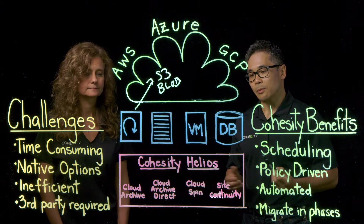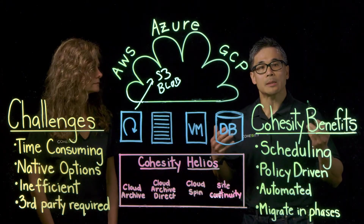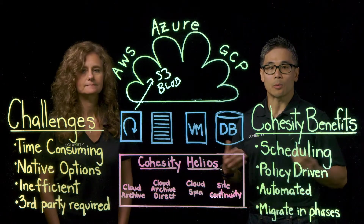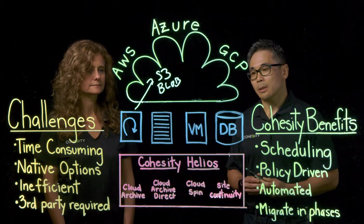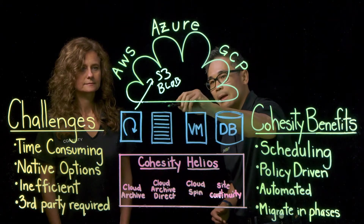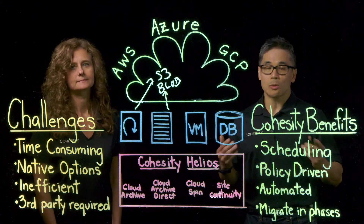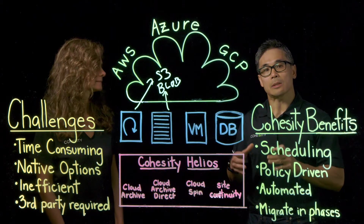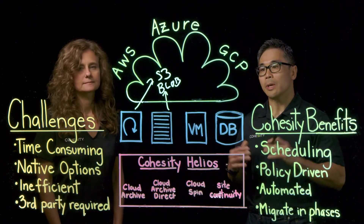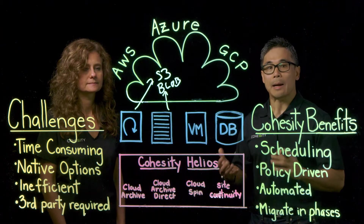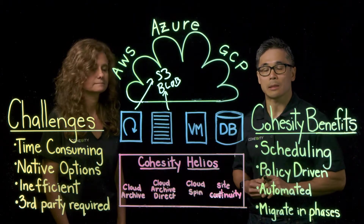Another option we have is what we call Cloud Archive Direct. Cloud Archive Direct works with your NAS device, your Windows filers and shares to move your file data to cloud storage as well. What's cool about this one is it actually takes the files in their original format and puts them into cloud storage, so you can access them directly with your cloud applications or give your users direct access in the cloud.